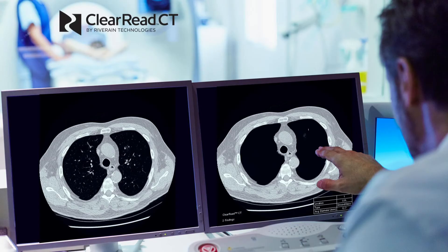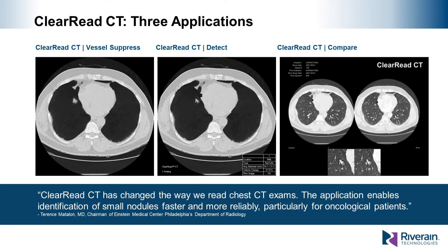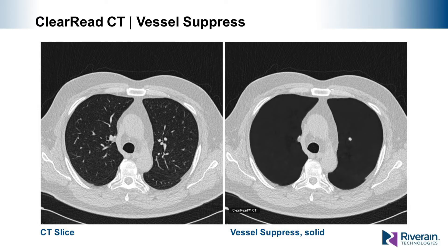ClearRead CT Vessel Suppress is a patented process for the suppression of vascular structure in the context of an axial CT exam utilizing simulated data. ClearRead Suppress works for all nodule types, enabling a clear visualization of nodules by removing structured noise. In this example, we see a typical CT slice on the left and the corresponding slice with vessel suppression applied on the right. This solid nodule finding was read as a false negative by radiologists in the study. Nodules in the central lung are inherently difficult to detect, especially when they are roughly the same shape and caliber as the surrounding vessels. However, with vessel suppression applied, the nodule becomes very apparent as it is separated from the surrounding vascular structure.